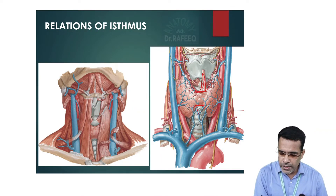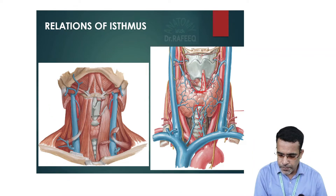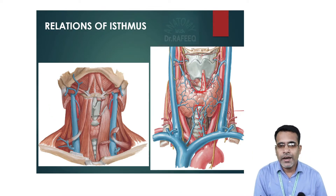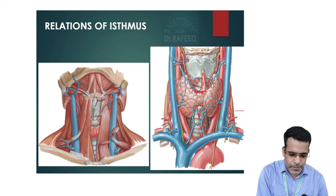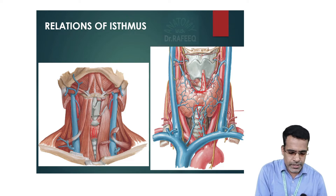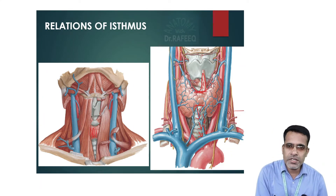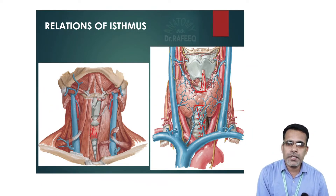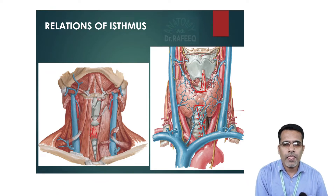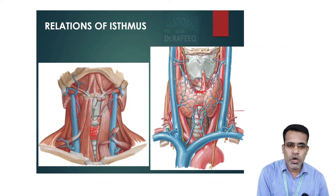The inferior border of the isthmus gives rise to the inferior thyroid vein, which drains into the left brachiocephalic vein. The anterior surface of the isthmus relates to the skin, fascia, and infrahyoid strap muscles of the neck. The posterior surface of the isthmus is related to the trachea — specifically the second, third, and fourth tracheal rings.